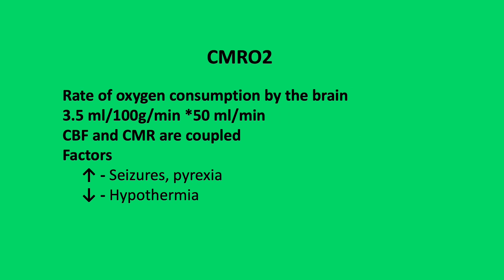CMRO2, the rate of oxygen consumption by the brain, is 3.5 mls per 100 grams of tissue per minute, or 50 mls per minute overall. Cerebral blood flow and CMRO2 are coupled, meaning that as oxygen consumption requirements increase, cerebral blood flow also increases. There are factors which increase CMRO2 — increased cerebral activity, seizures, and pyrexia — thereby increasing cerebral blood flow, whilst hypothermia reduces CMRO2 and therefore reduces cerebral blood flow.